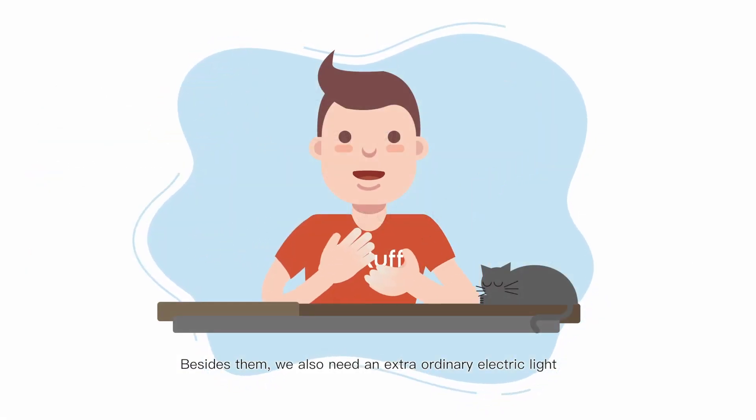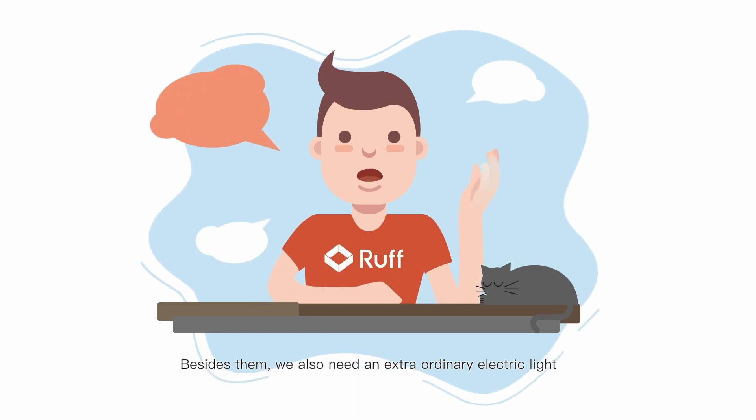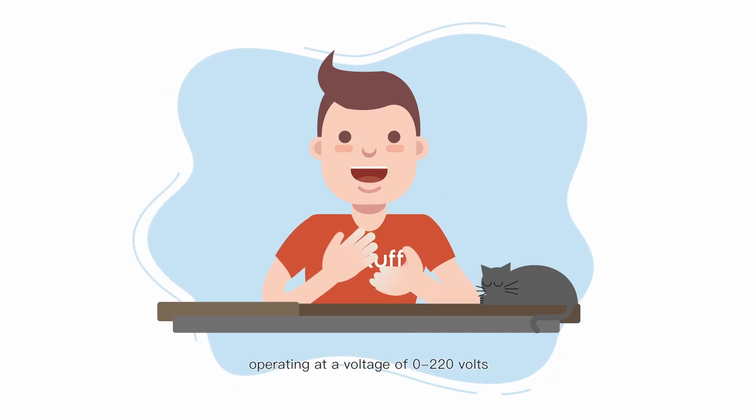Besides them, we also need an ordinary electric light, which is for domestic use, operating at a voltage of 220 volts in China.